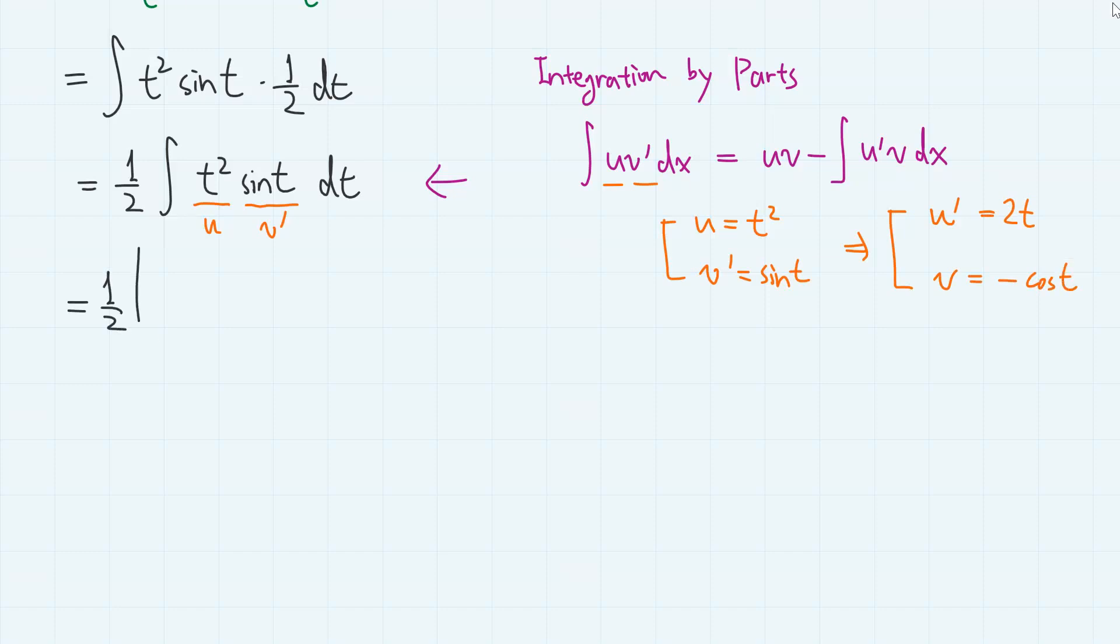So 1 half times uv minus t squared cosine t minus integral u prime v. So minus 2t cosine t dt.